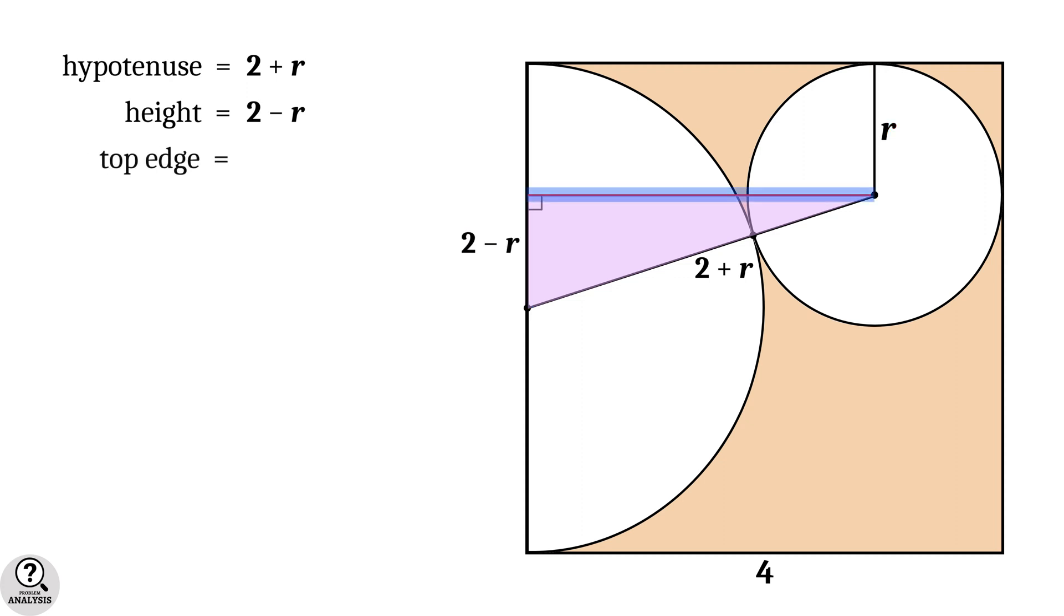The top edge of the triangle is equal to side length of the square, that is four minus this length, which is equal to the radius of the circle r. Then, the top edge is equal to four minus r.